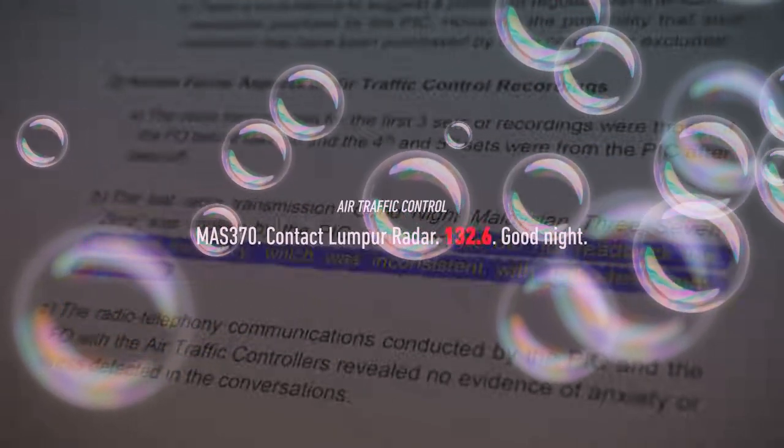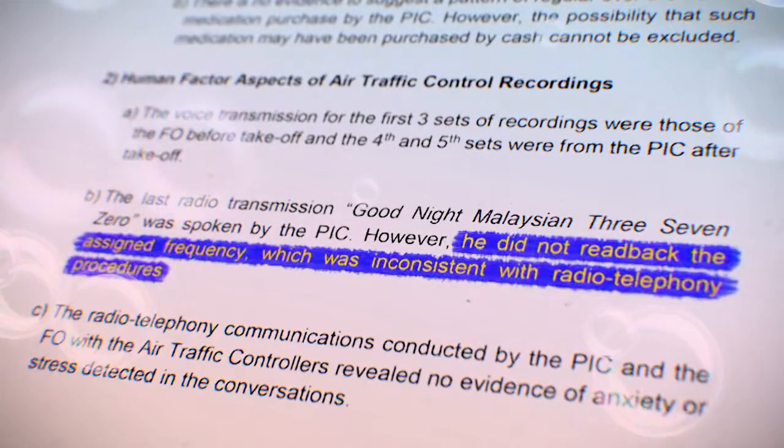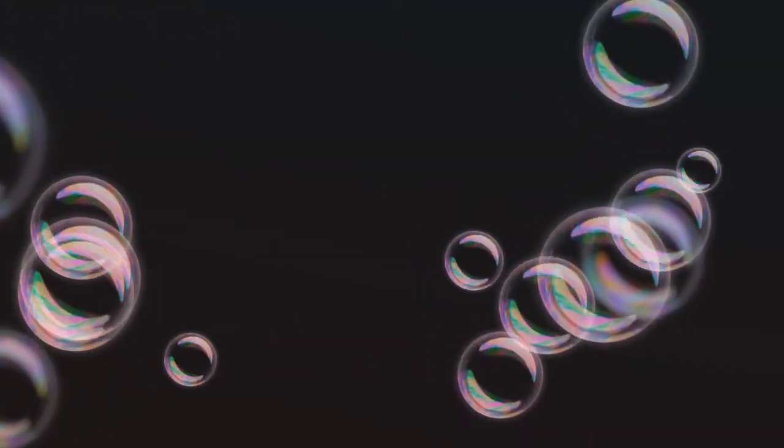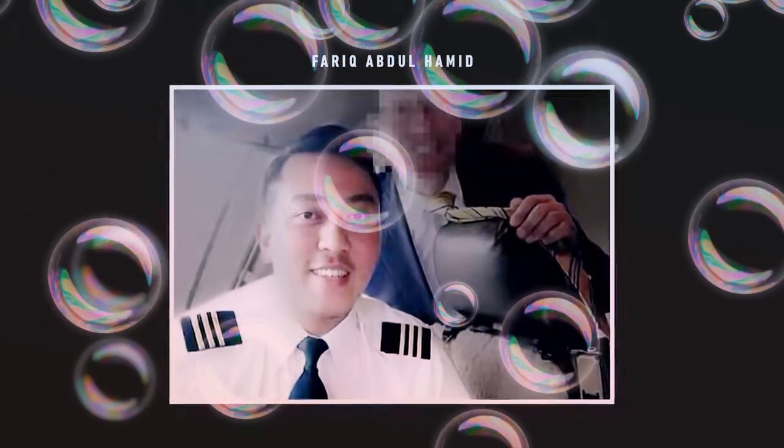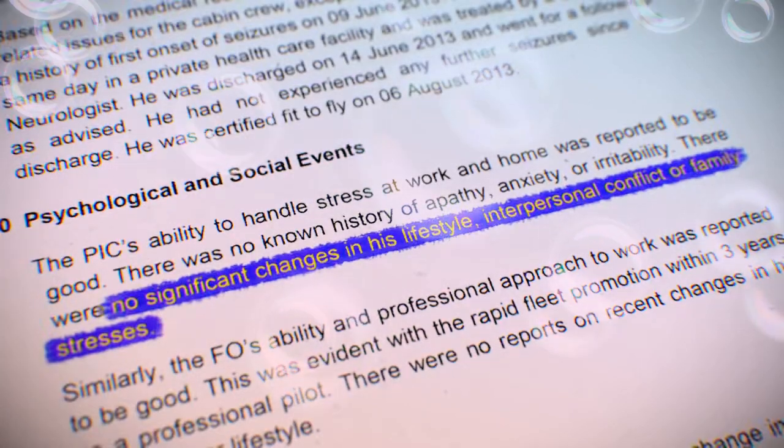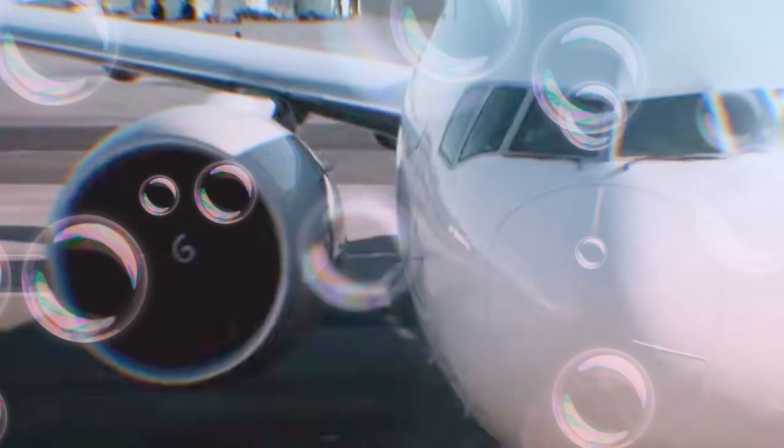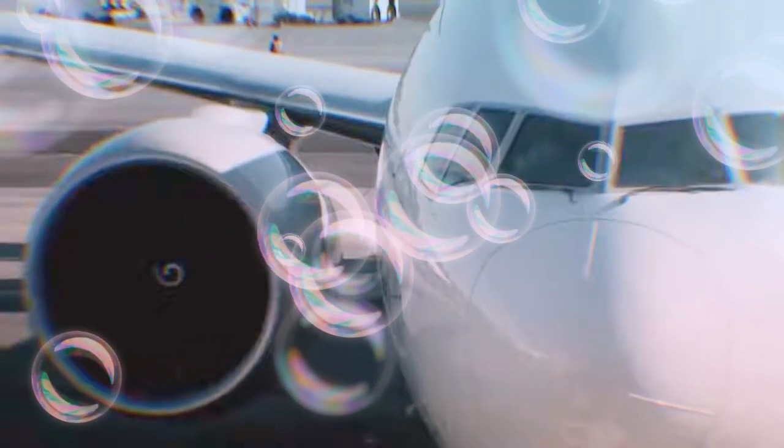It would have been standard procedure to repeat the assigned frequency as the captain had correctly done a few minutes prior. Whether this omission is indicative of anything but a mistake is anyone's best guess. By all accounts, Captain Zahari was an affable and well-respected pilot who was passionate about aviation as evident by the photos and videos he shared on social media. The co-pilot was found to be even less conspicuous. Farik Abdul Hamid was only 27 and due to marry a fellow pilot. He had nearly 3000 hours of flight experience, although only 39 hours in this type of aircraft. Much like Zahari, Farik had no financial, mental, or interpersonal issues of note. Nor was there any evidence of conflict between the two of them.